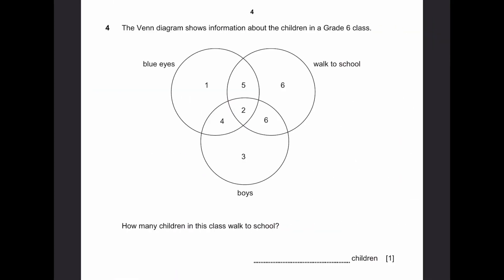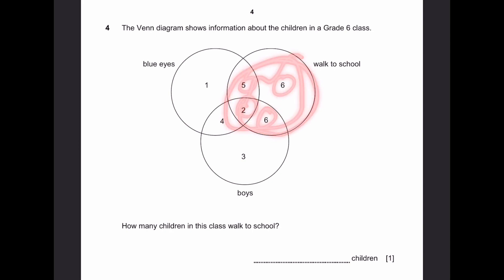Question 4. The Venn diagram shows information about the children in the grade 6 class. How many children in this class walk to school? That's 6 plus 6 plus 2 plus 5, because all of this is inside the walk-to-school circle. When we do that, we get 19 students.